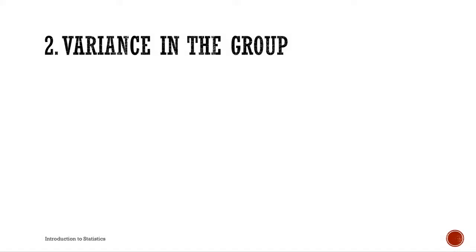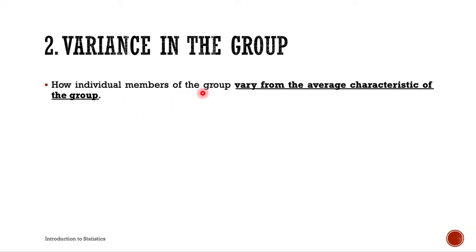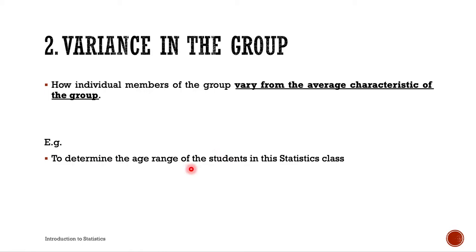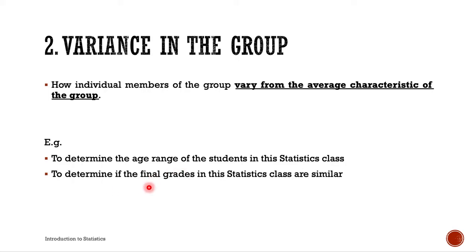Next is variance in the group — how individual members of the group vary from the average characteristic. Some examples: to determine the age range of students in this statistics class, or to determine if the final grades in this statistics class are similar. If they are not similar, the variance would be considered high.